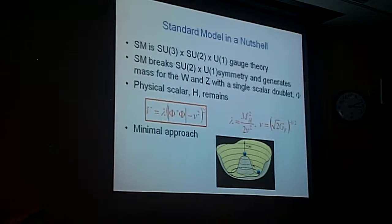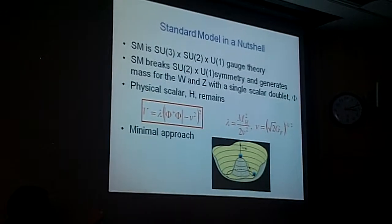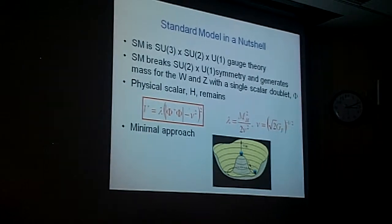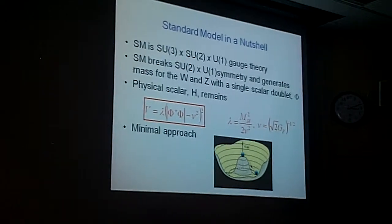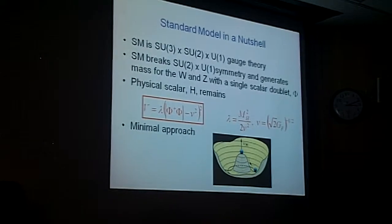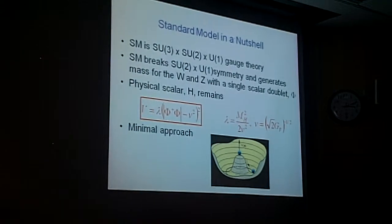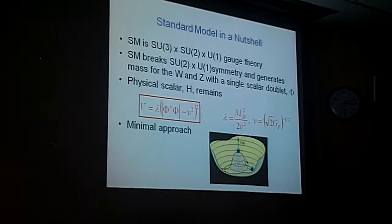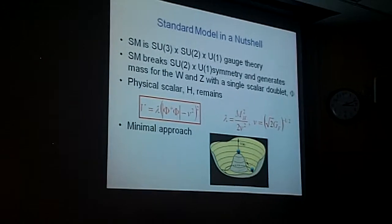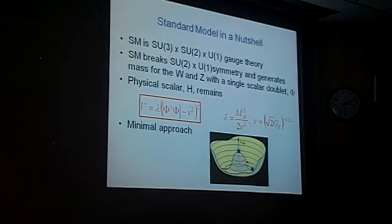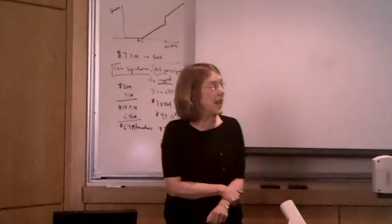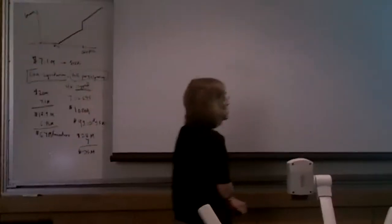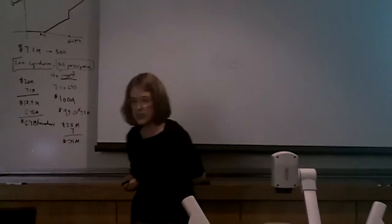After the symmetry is broken, and here's my cartoon down here, when the ball is sitting at the top, there's a symmetry when you rotate around it. But once the ball falls down the potential, you've broken this rotational symmetry. It generates a mass for the W and Z, and it leaves a physical scalar. Well, my colleagues had many suggestions as to what I should call this scalar. The one I liked best was the quantum of electroweak symmetry breaking. But I've called it the H particle, H for heavy.